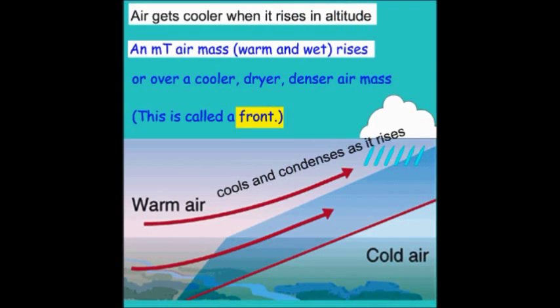Now, an air mass doesn't have to go over a mountain in order to change its altitude. If a warmer air mass meets a colder air mass, that's called a front, and the warmer air mass rises over the cold air mass in the same way that air rose over the mountain in the previous example.